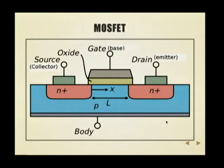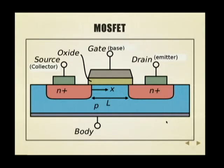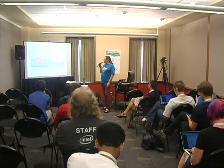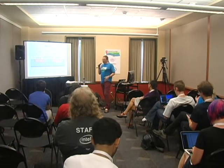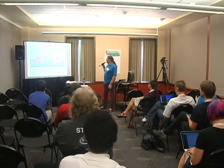If you apply a voltage at the gate, then current will flow between source and drain. If you know classical transistors, you might remember these things as base, collector, and emitter. In MOSFET's world, they are called gate, source, and drain, but they conceptually do the same thing.